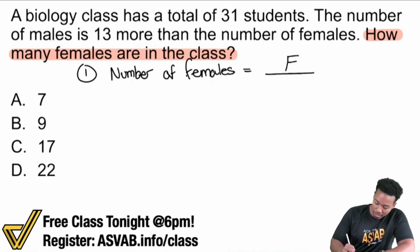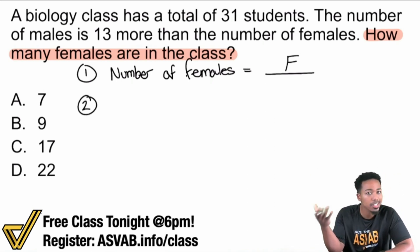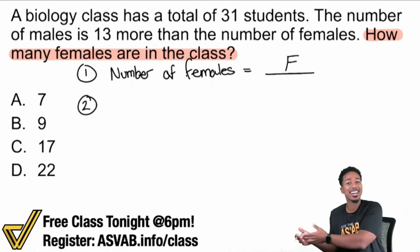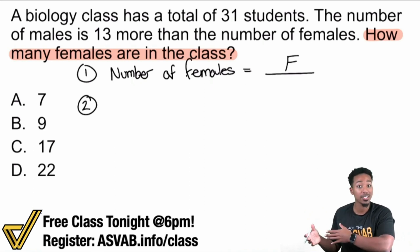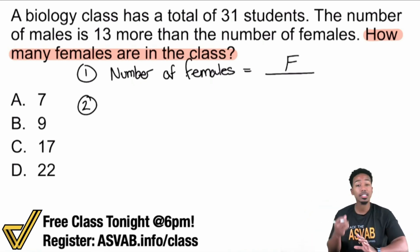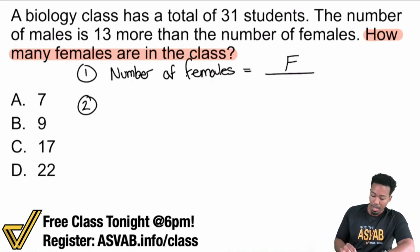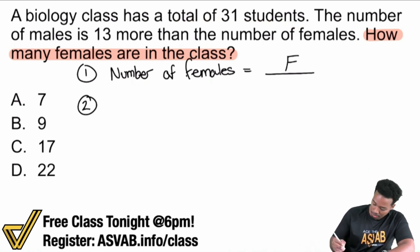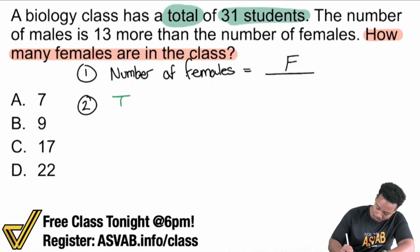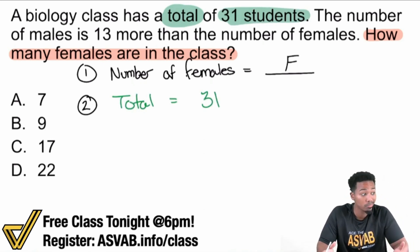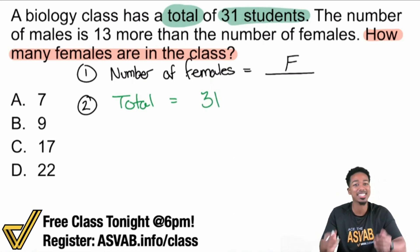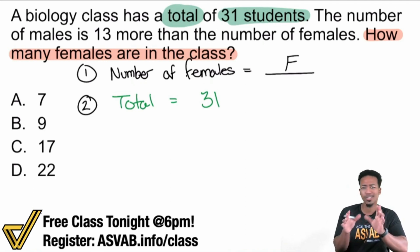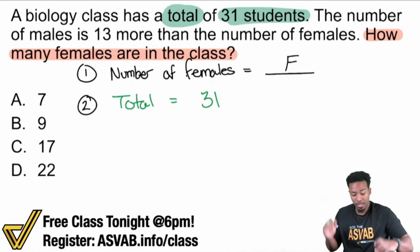Now the next step is: after I know what I want, let's look at the information that we have. Let's check everything out and see what we can do to prepare ourselves to solve this. That just takes some patience — collect the information and try to notice the connections. So what do we notice here? A biology class has a total of 31 students. So I'll write: total equals 31. Whenever we're talking about the total of a number of people, we're adding up, we're getting the sum. Total of 31 just means we're adding up to get 31.